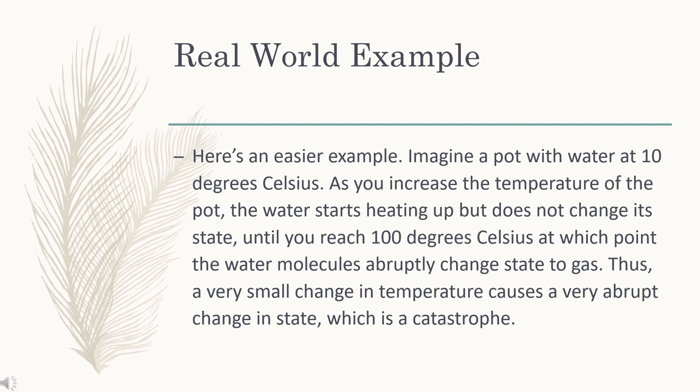An even easier example to understand is imagining a pot of water at 10 degrees Celsius. As you increase the temperature of the pot, the water starts heating up but does not change in state until you reach 100 degrees Celsius, at which point the water molecules abruptly change state to gas. Thus a very small change in temperature causes a very abrupt change in state, which is a catastrophe.